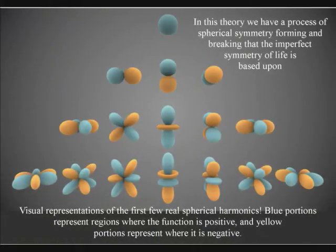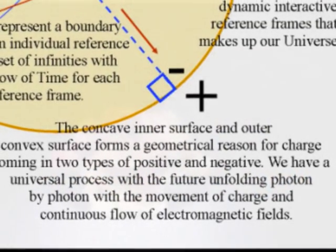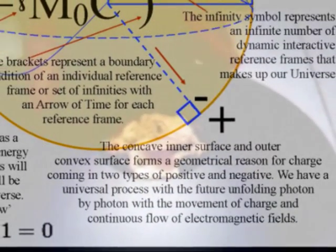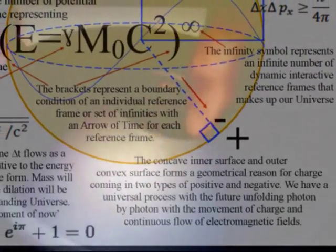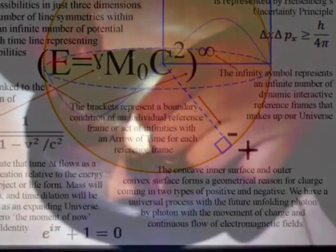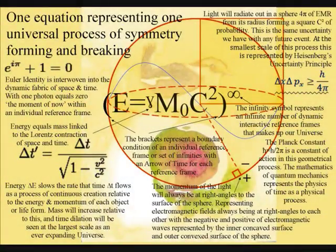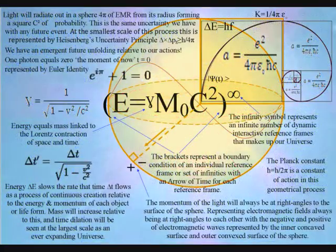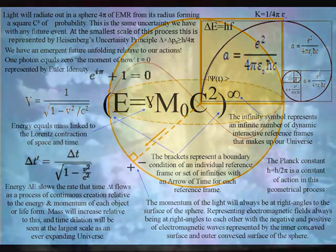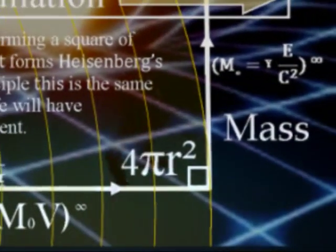As a process of continuous spherical symmetry forming and breaking, this also gives us a geometrical reason for positive and negative charge, with a concave inner surface for negative charge, and a convex outer surface for positive charge. Therefore, we can have the use of the holographic principle, with the information of our three-dimensional universe encoded on a two-dimensional boundary condition by the movement of positive and negative charge. This whole theory can be explained in just one equation, with energy equals mass, linked to the Lorentz contraction of space and time.